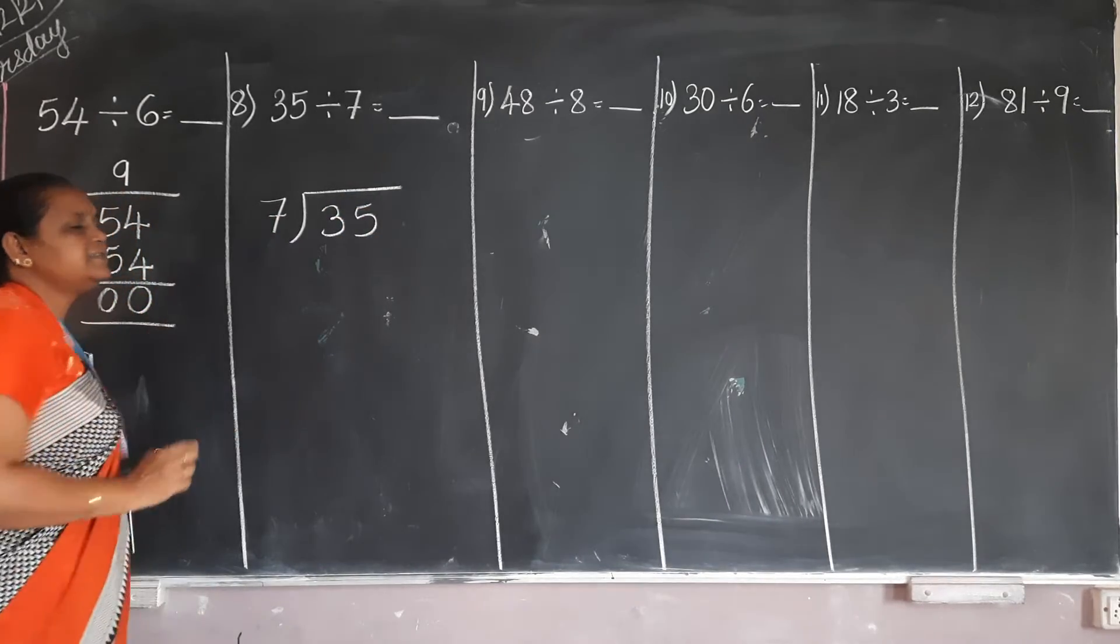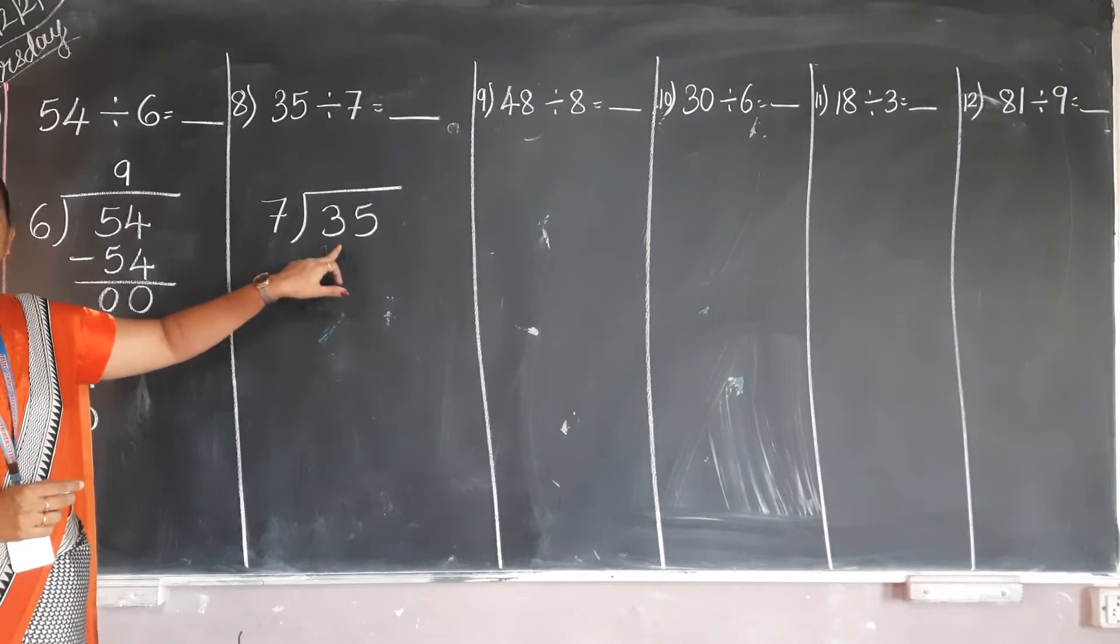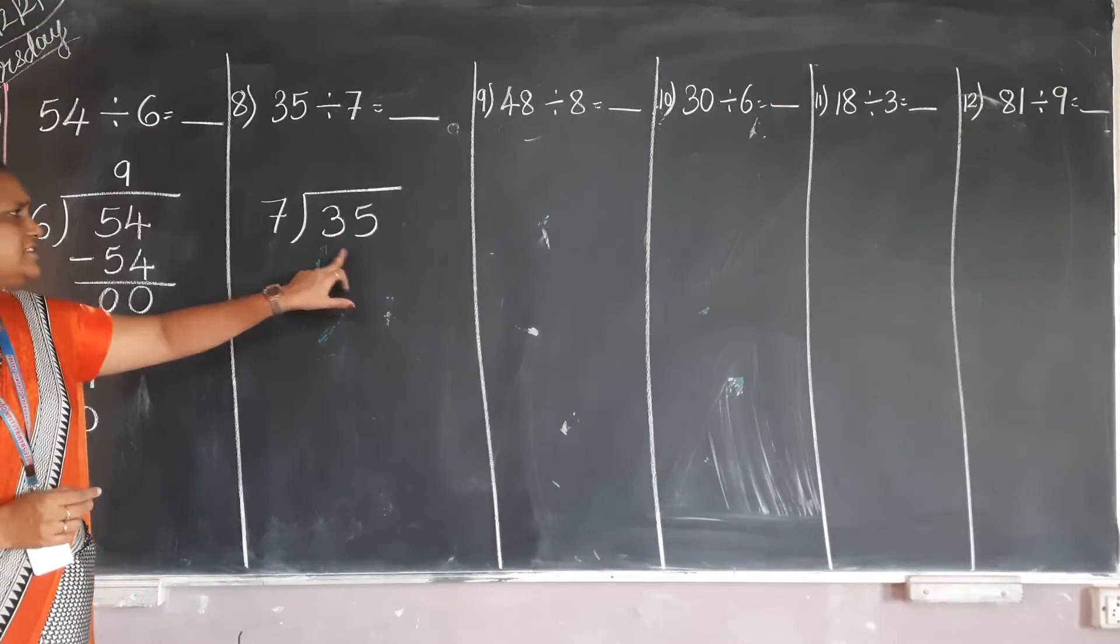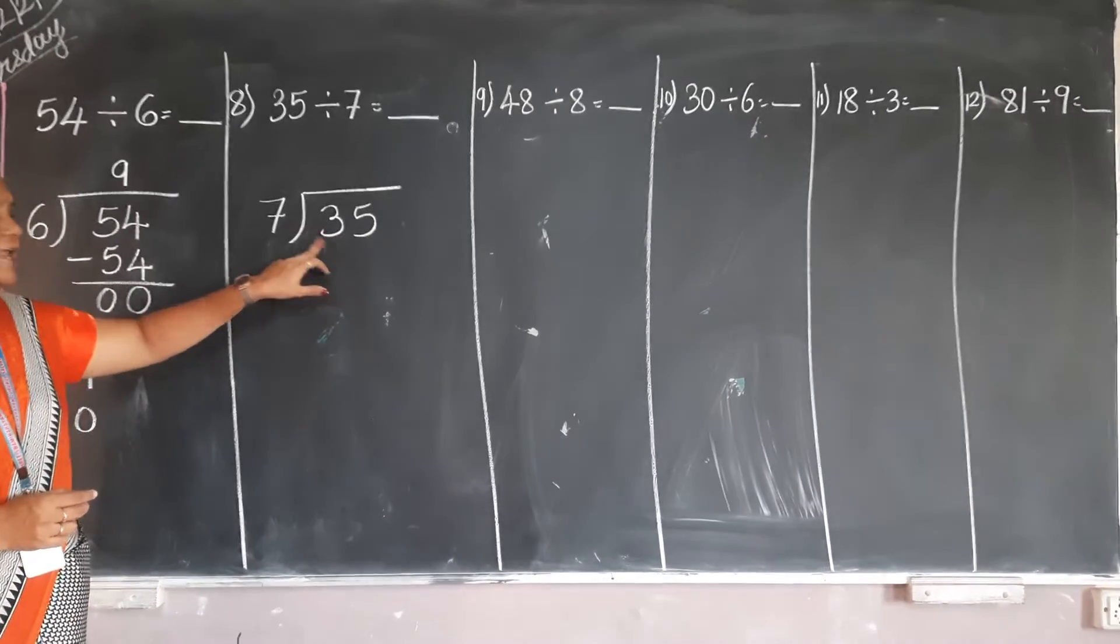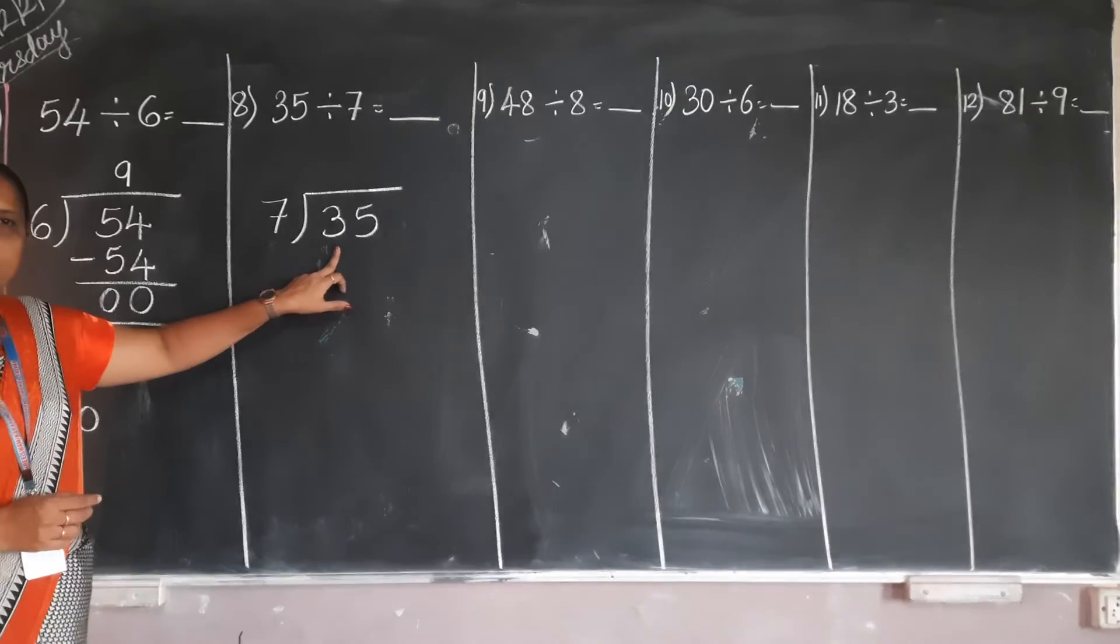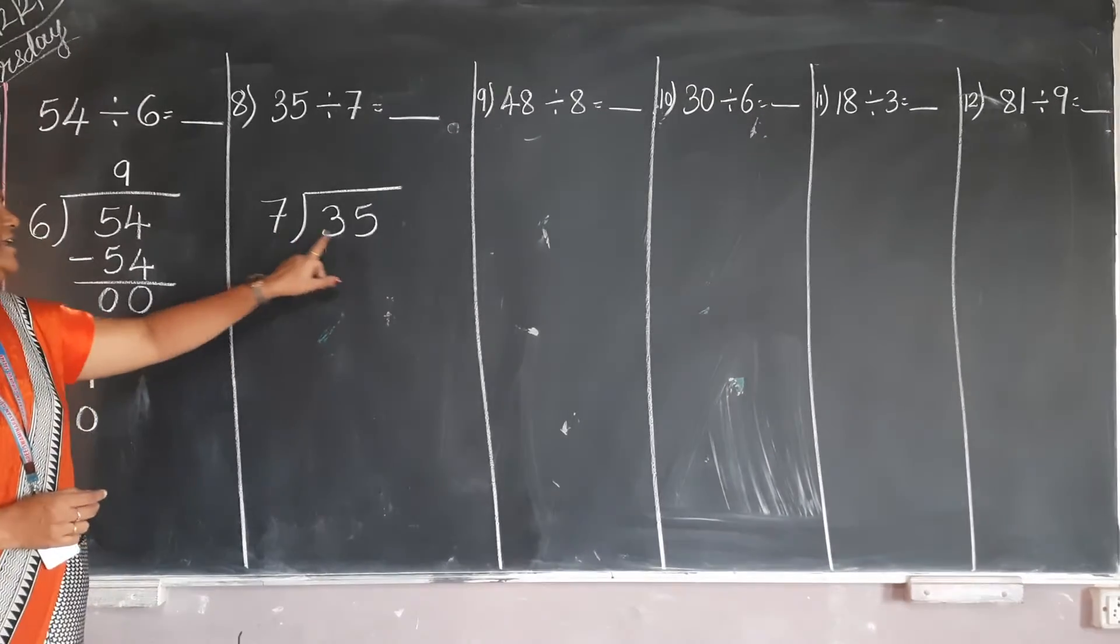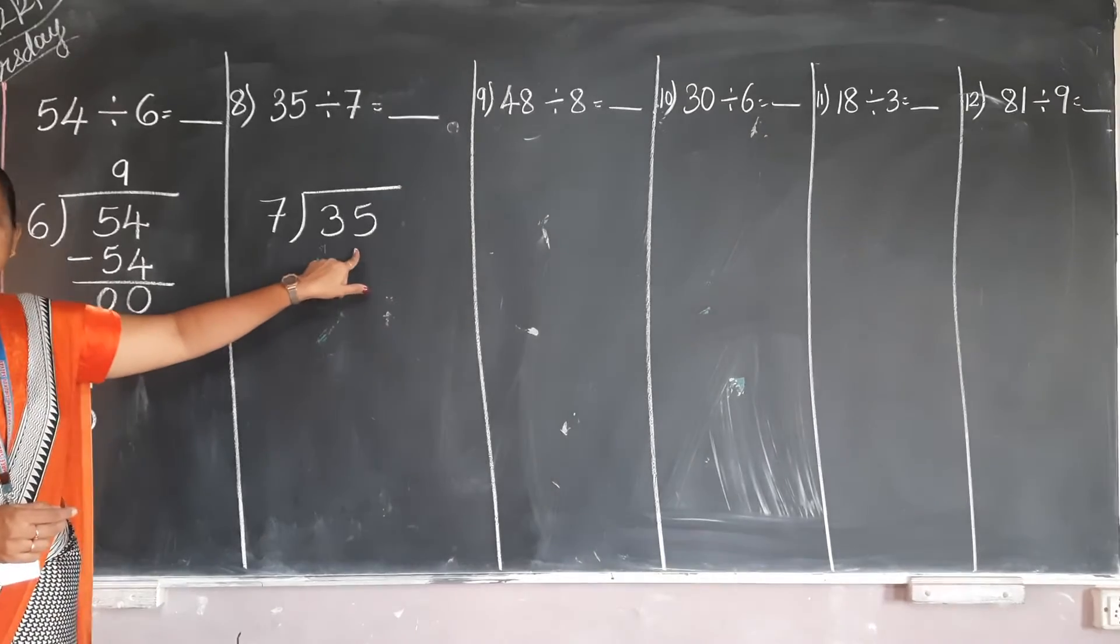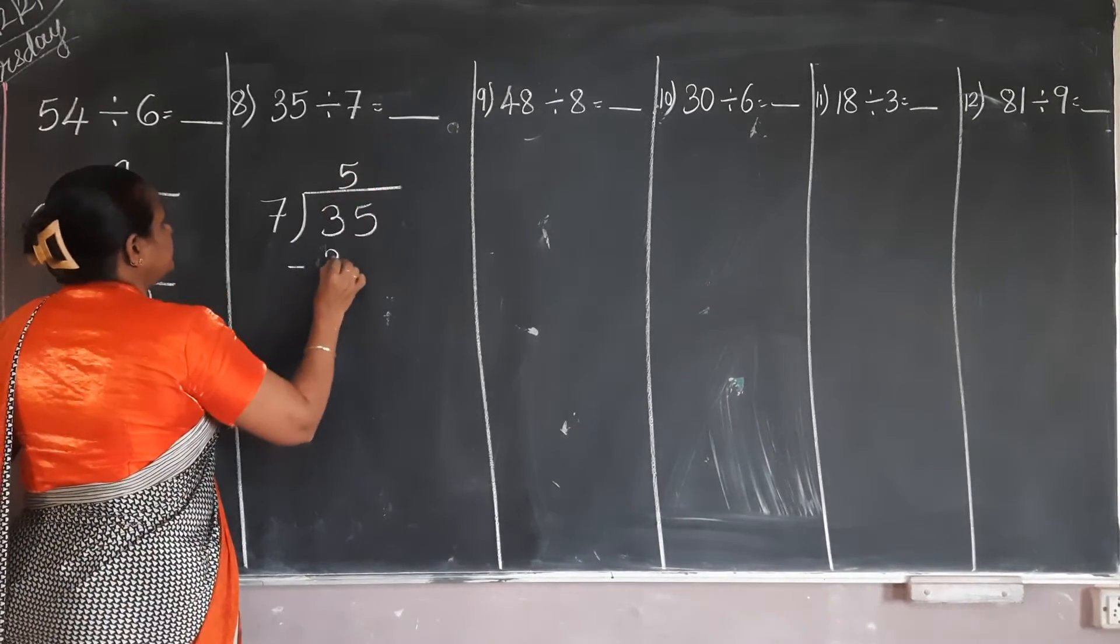Now the divisor is 7 and dividend is 35. But we have to see the first number. First number is 3. 3 first number है, तो 3 small है, 7 से 3 small है. तो हमें क्या करना है? 2 digit लेना है. So in 7th table, 35 is in which place? 7. 5s are?